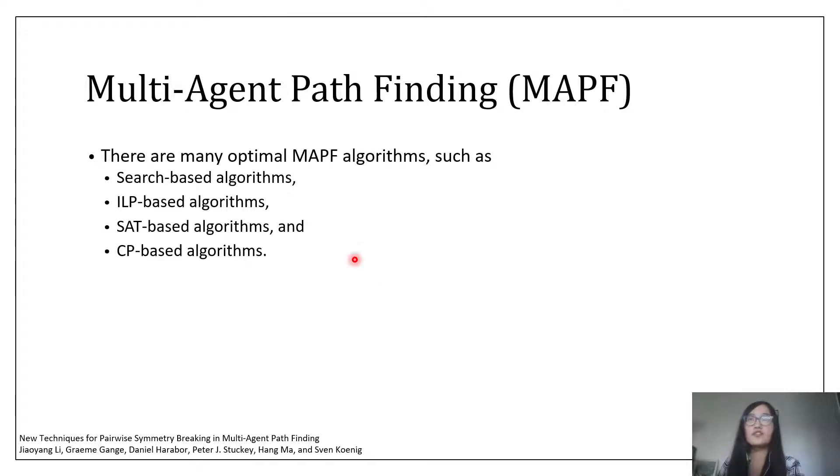There are many algorithms for solving this problem optimally. For example, we can use A-star to search in the joint state space, or model the problem as multi-commodity flow and solve it with an integer linear programming solver. However, since the joint state space grows exponentially in the number of agents, these methods usually do not scale well.